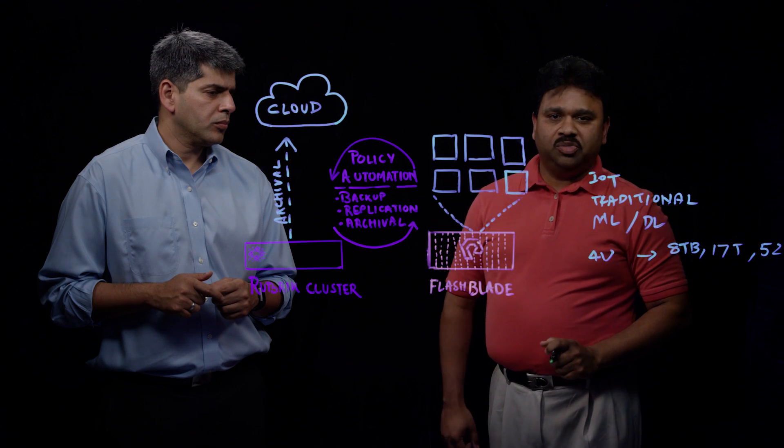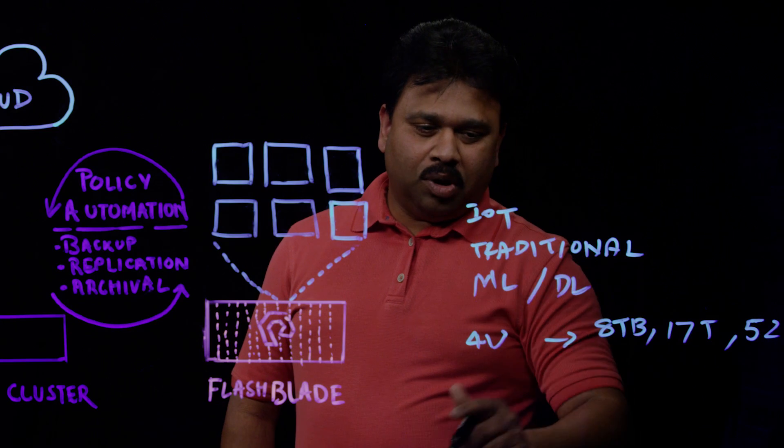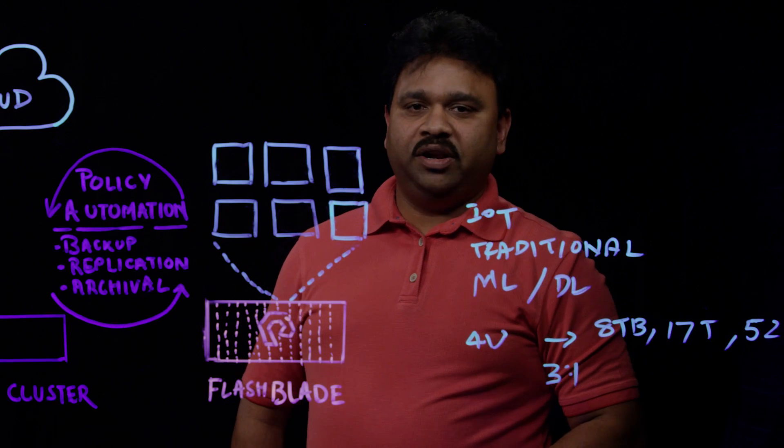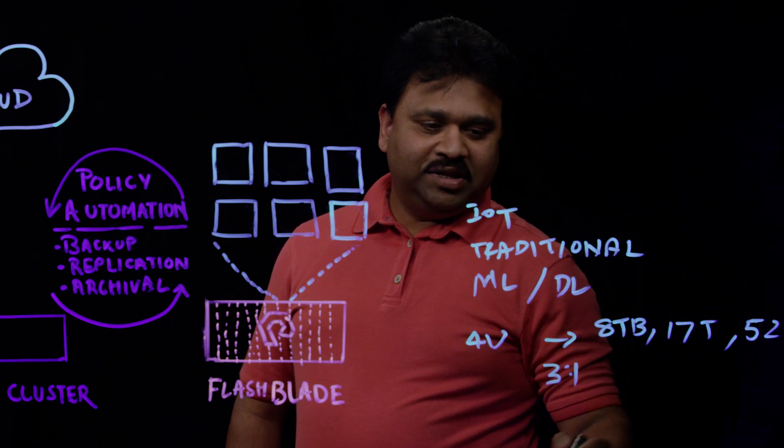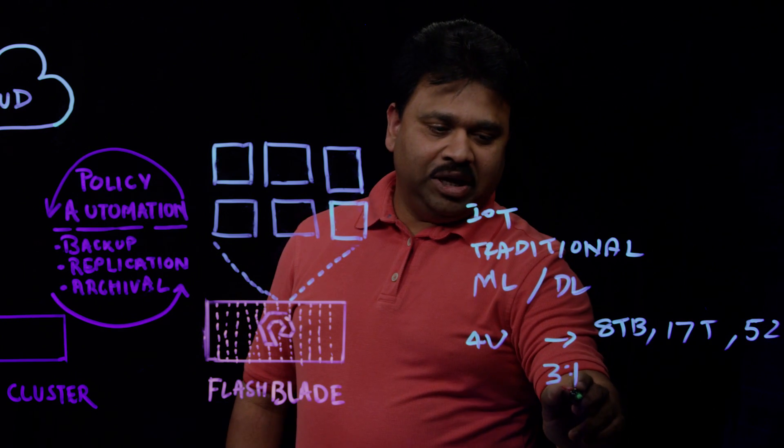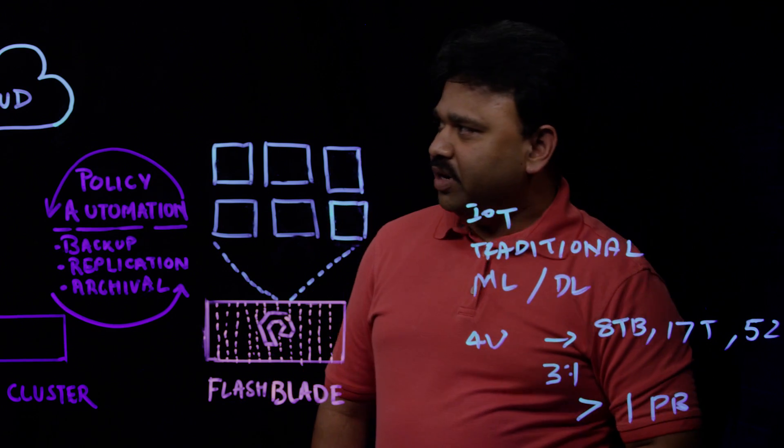And we natively support data reduction that is compressibility on the Flash Blade. So normally, we get anywhere from 3 to 1 data reduction on the Flash Blade, which on a 52 terabyte 15 blade system, gives you usable capacity of more than one petabyte. That's impressive.